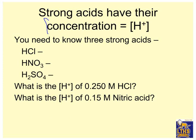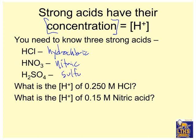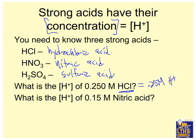Strong acids have their concentrations equal H⁺. So whatever the concentration of the acid is, that's going to equal H⁺. You need to know your three strong acids — and you should know them by name as well: hydrochloric, nitric, and sulfuric. Those all should end in acid. So what is the H⁺ concentration of 0.25 molar HCl? If it's a strong acid, and it is, then 0.25 molar HCl equals 0.25 molar H⁺, because it dissociates 100%. So H⁺ for 0.15 molar nitric acid — it's on my strong list — is 0.15 molar H⁺.